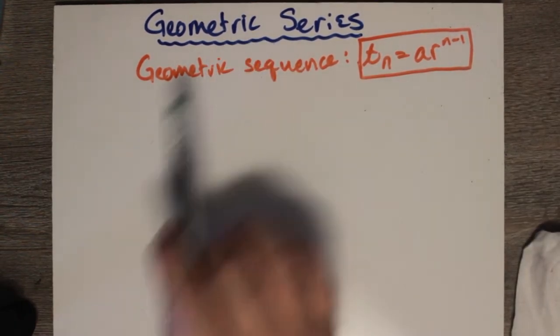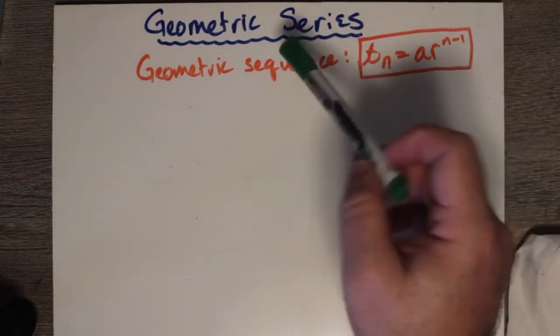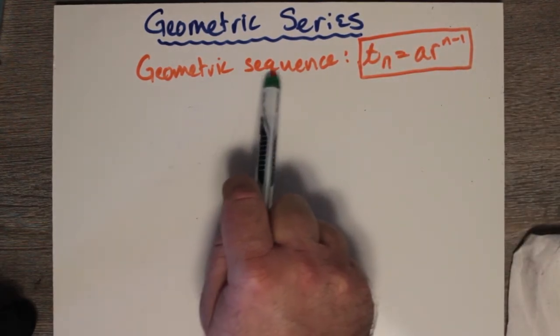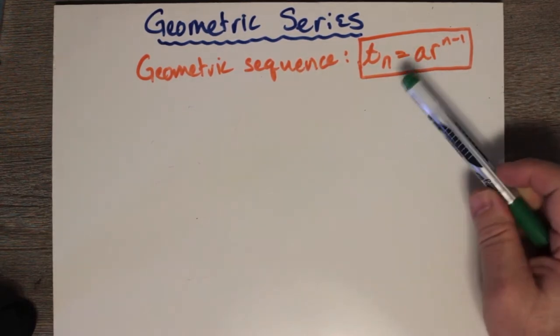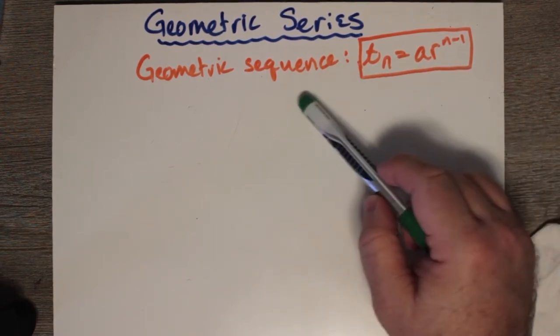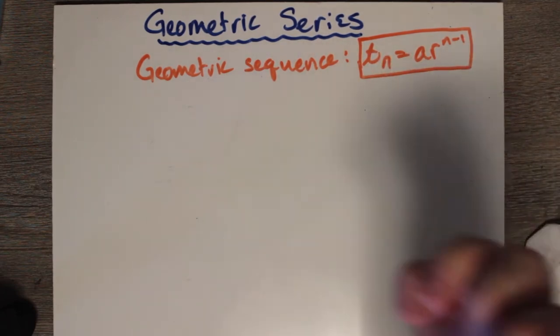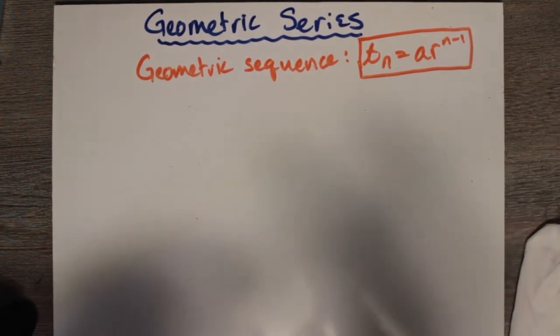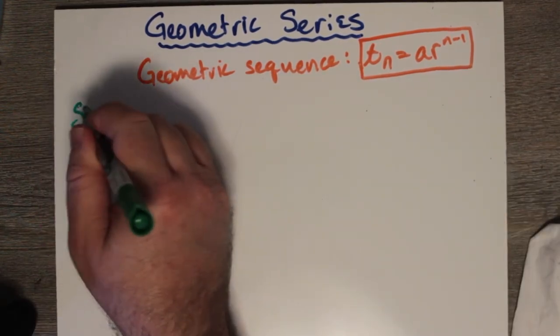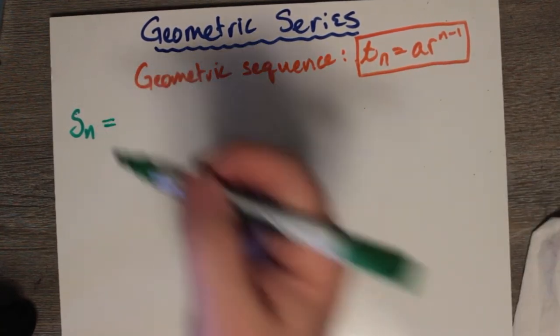Okay, so this is about geometric series. The geometric series is really a sum of the terms in a geometric sequence. Let's say we want a sum of the first n terms in the sequence to make a series.